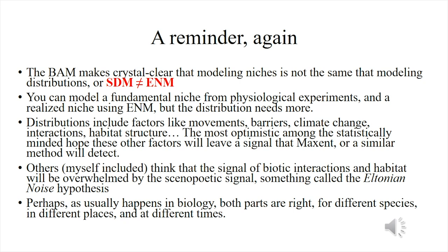Distributions include factors like movements, barriers, climate change, interactions, habitat structure — a lot of things. Some optimistic people hope that this will be captured statistically when you do a Maxent or a GLM or a GAM or anything. Others, myself included, think that those parts tend to be finely grained and therefore we call them Eltonian noise. We hope that those factors are going to act basically as noise when you do your modeling, and perhaps as happens very often in biology, both sides have some part of reason.